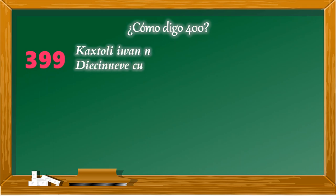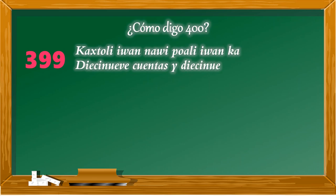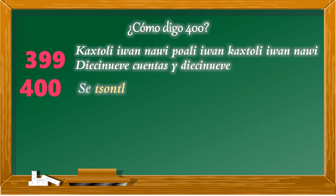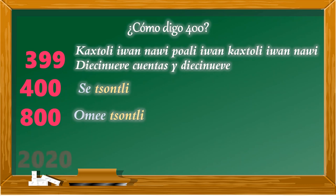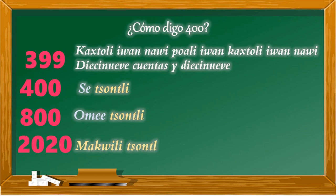Hasta el 399 se sigue empleando el poali mediante cuentas, así que 399 se dice cachimatipoali iwamachiknawi. Al llegar al 400 surge el nuevo nombre: zontli. Para 400 sería cetzontli. Al tener 800, que son dos 400, sería ometzontli. Retomando el año en que estamos, el 2020, sería macwilitzontli.